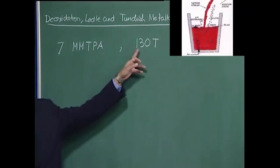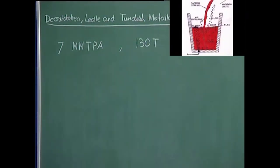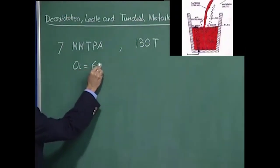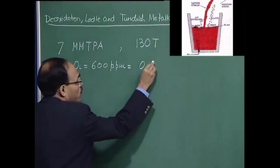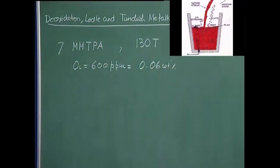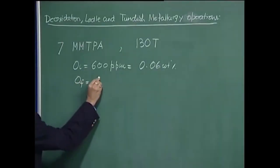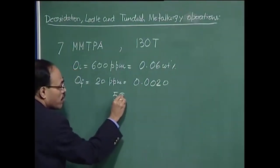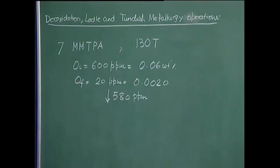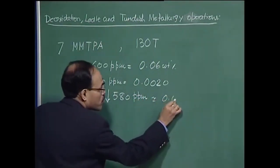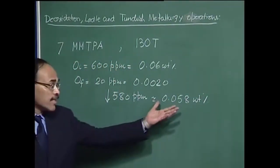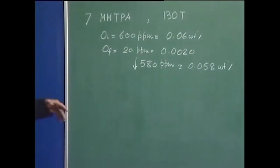That implies that the size of the ladle or vessel we are talking about is about 130 tons. Let us assign some typical characteristics: the initial oxygen O_i is about 600 ppm, which converts to 0.06 weight percentage. We want a killed steel, so let the final oxygen in the steel be of the order of 20 ppm. That means we remove 580 ppm of oxygen, equivalent to about 0.058 weight percentage. So in every kg of molten metal there is about 0.058 kg of oxygen that is required to be removed.